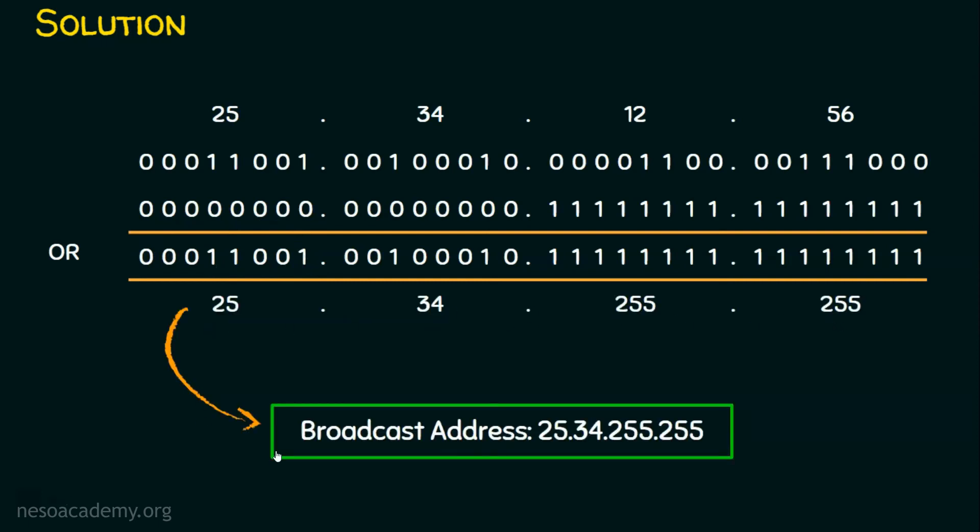So 25.34.255.255 is the broadcast address. To repeat: when you intend to find the broadcast address, please ensure this step — after converting the subnet mask into binary, do ones complement, then perform the OR operation.